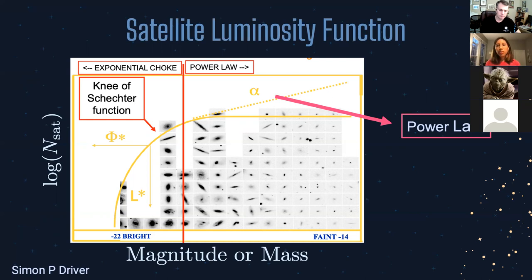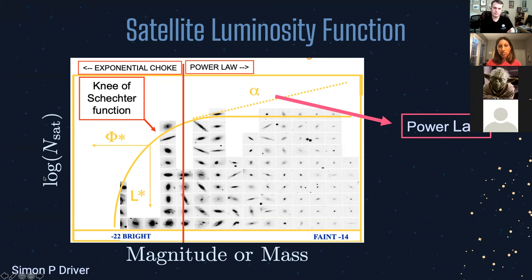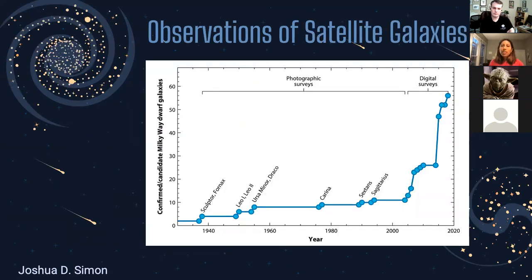Together with the stellar mass halo mass relation, the halo and subhalo mass function, and the satellite luminosity function, we can constrain the slope of the stellar mass halo mass relation — meaning we can relate satellite galaxy abundances to the host galaxy's halo mass. Over the years, observations of satellite galaxies have been really important tests of hierarchical structure formation and galaxy evolution. Since we live inside the Milky Way, we've been able to greatly study satellite populations of the Milky Way and Milky Way-like galaxies.